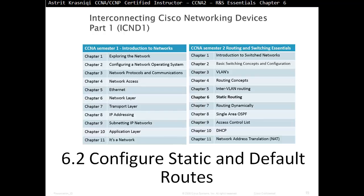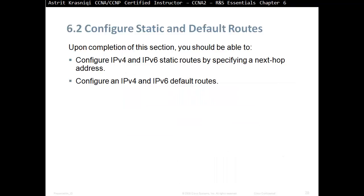Hello and thank you for watching my video. My name is Astrid Krasnici. I'm a CCNA and CCNP Certified Instructor. On this video we are covering CCNA Semester 2, Routing and Switching Essentials, Chapter 6, Static Routing. This is Section 6.2: Configure Static and Default Routes. Upon completion of this section, you should be able to configure IPv4 and IPv6 static routes by specifying a next hop address, and configure an IPv4 and IPv6 default routes.